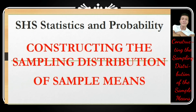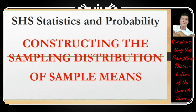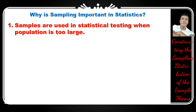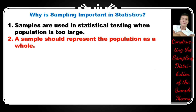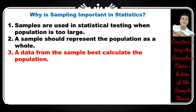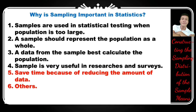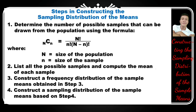Welcome back to my channel. In this video, I will discuss how to construct the sampling distribution of sample means. But first, let's talk about why sampling is important in statistics. Number one, samples are used in statistical testing when the population is too large. Number two, a sample should represent the population as a whole. Number three, data from the sample best calculates the population. Sampling is very useful in researches and surveys. Fifth, it saves time by reducing the amount of data.